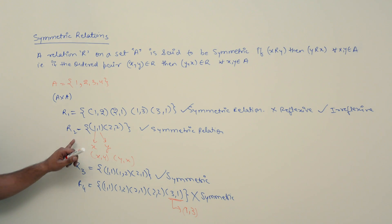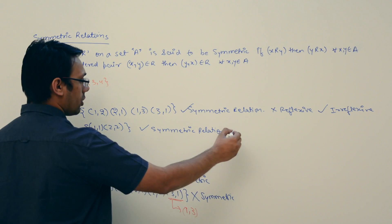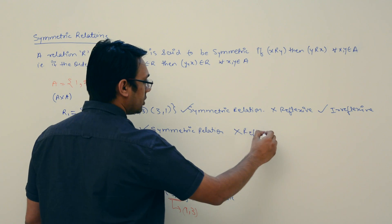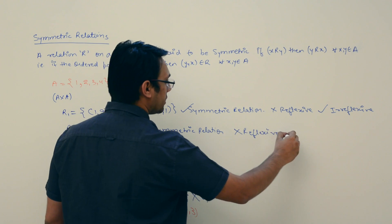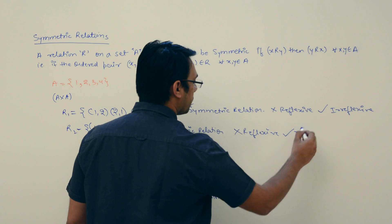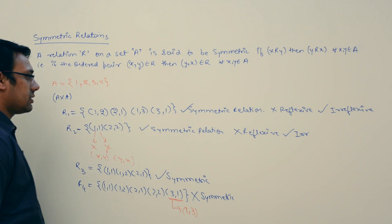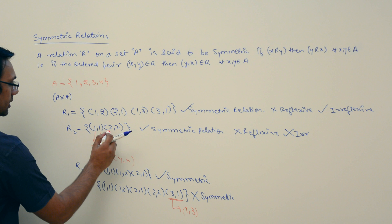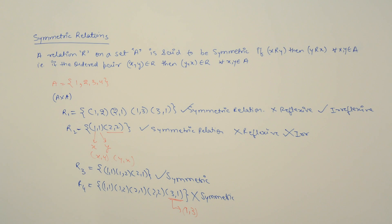Now look at R2. This relation R2 is not reflexive, but this relation R2 is also not irreflexive. Why? Because it is containing the pair (2,2). So R2 is neither reflexive nor irreflexive.